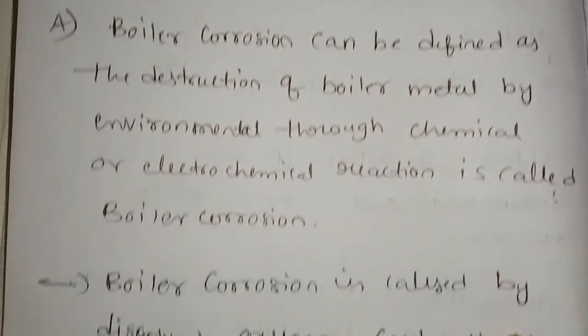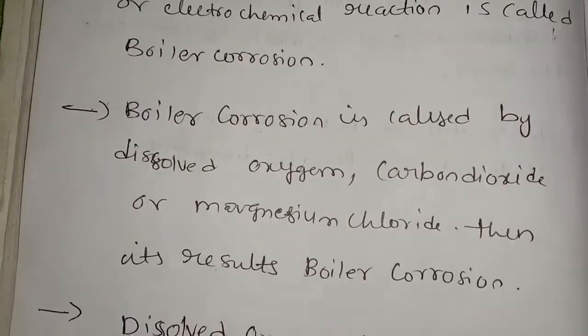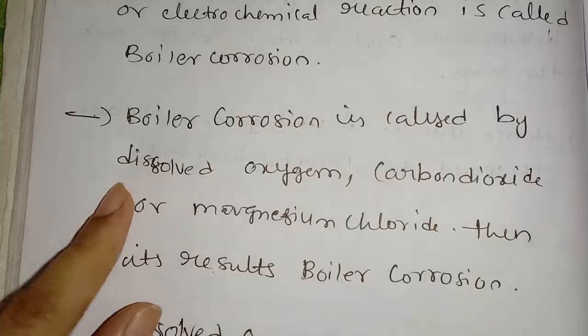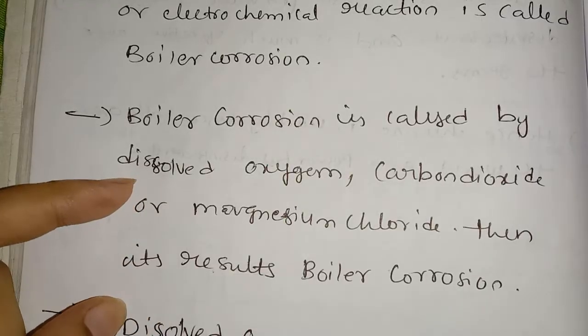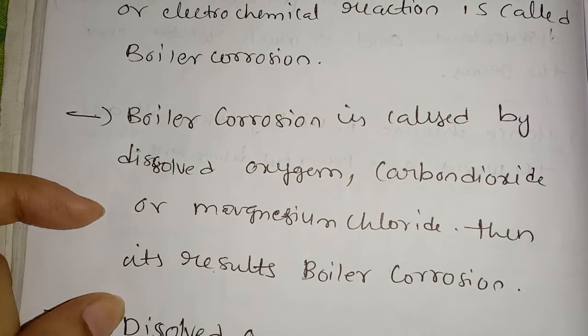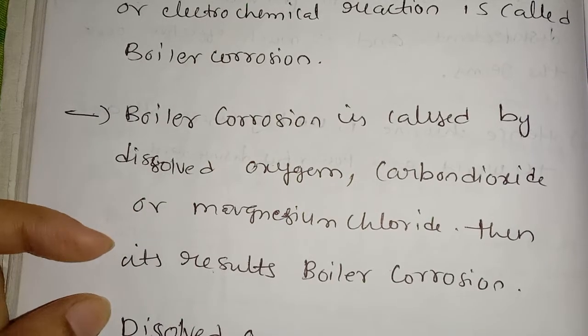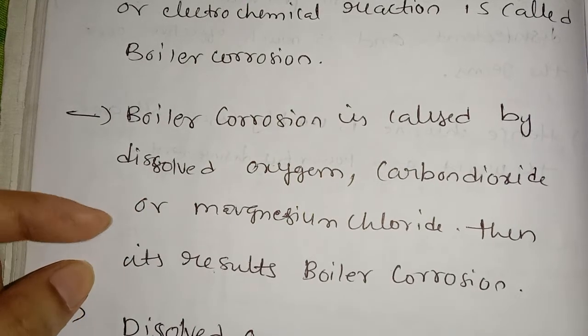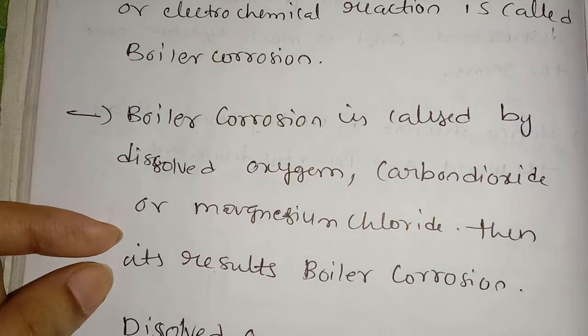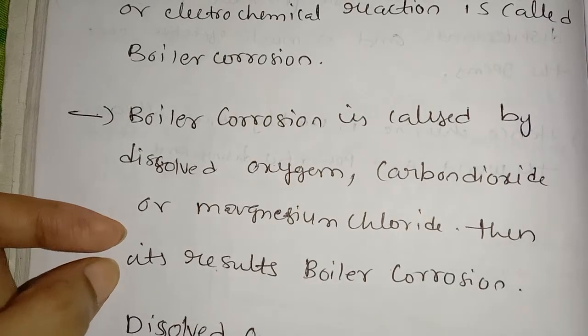Boiler corrosion is caused by dissolved oxygen, carbon dioxide, and magnesium chloride. These are the main causes of boiler corrosion.